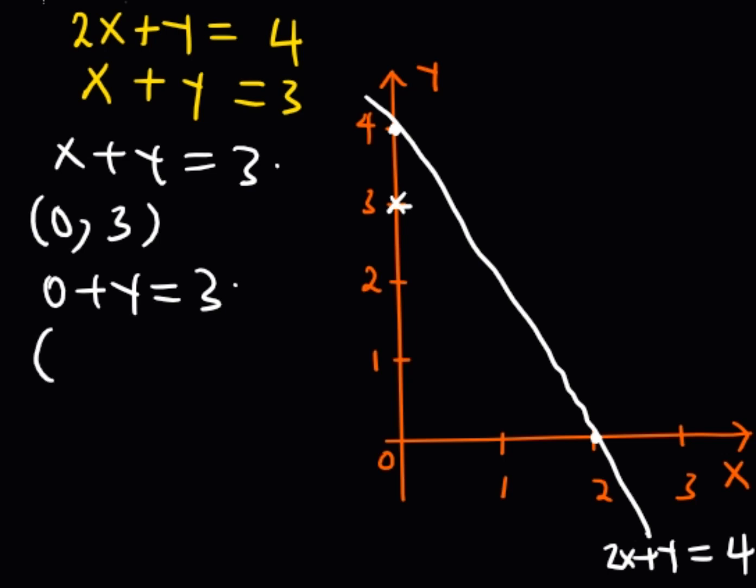Next, I need the value of x when y is 0. Substituting: x + 0 = 3, so x = 3 when y is 0. This gives us the point (3, 0).